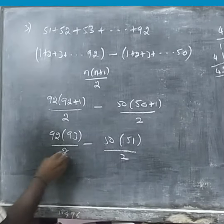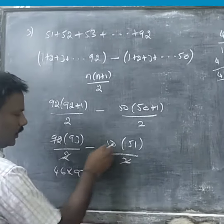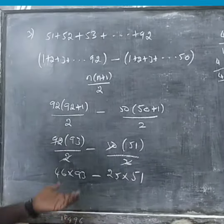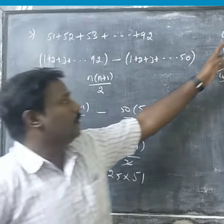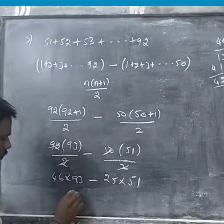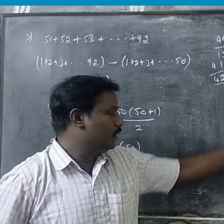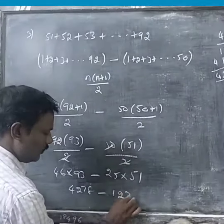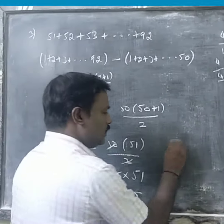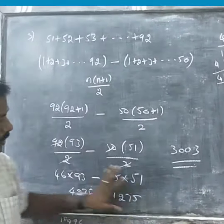Now we can cancel it. You can cancel the 2, so we get 46 into 93 minus 25 into 51. So 46 into 93 — multiply: 4278. Then 25 into 51 — multiply: 1275. Now 4278 minus 1275 — the answer is 3003.